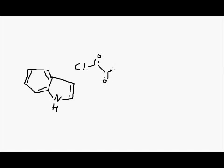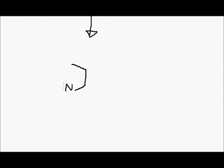He starts with this molecule, indole, and adds to it oxaloyl chloride, which is a quite reactive two-carbon subunit. We see here the electrons pushing from the nitrogen through the indole ring and reacting with the first acyl chloride moiety. That gives us an intermediate, which is indole oxaloyl chloride.